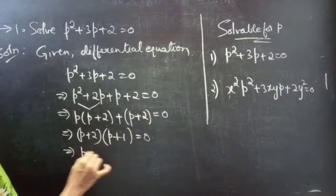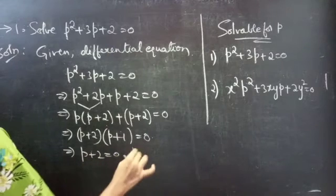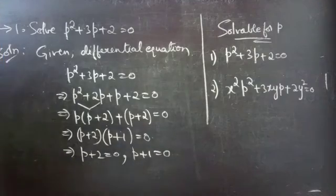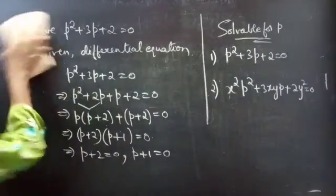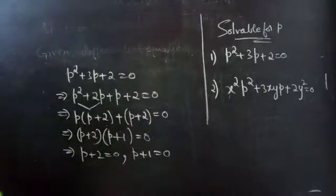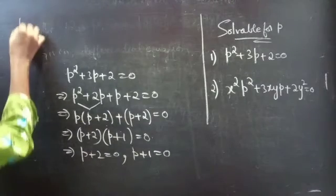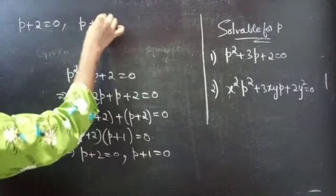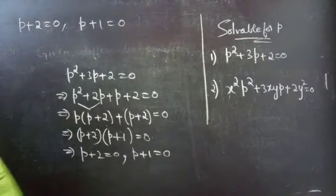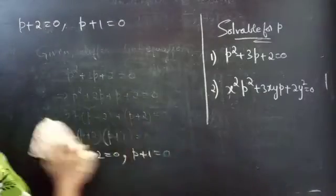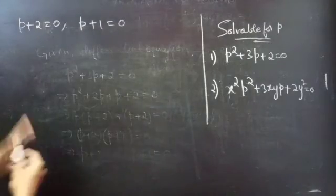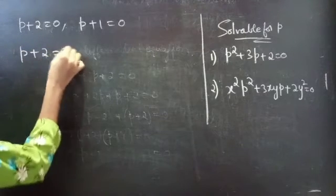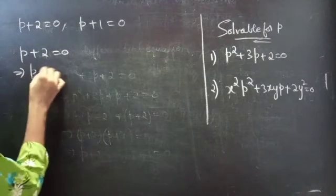Then P plus 2 equals to 0 and P plus 1 equals to 0. We will find solutions for each. Consider the first equation P plus 2 equals to 0, so P equals to minus 2.